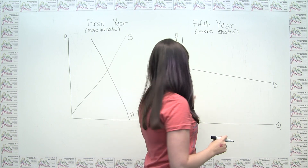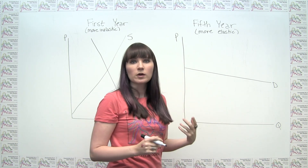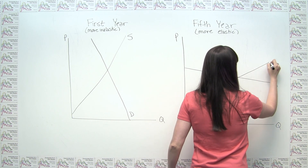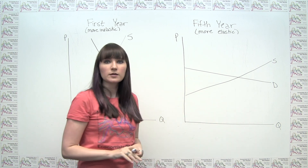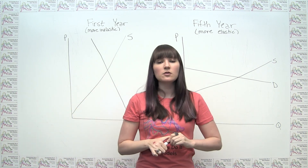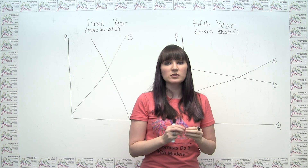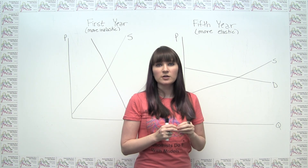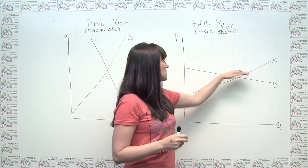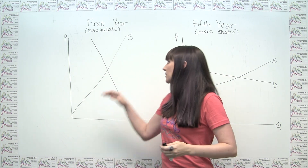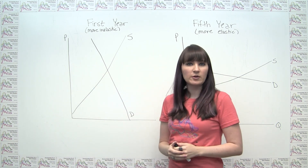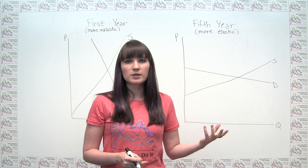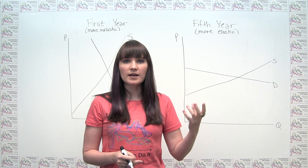In the longer term, producers are also able to be more elastic, and we would see a supply curve that's flatter, because more elastic is flatter. In summary, because we know that over longer time horizons both consumers and producers are able to be more price elastic, both our supply and demand curves are going to look more elastic — more horizontal — over this longer time horizon than they do over the shorter one.